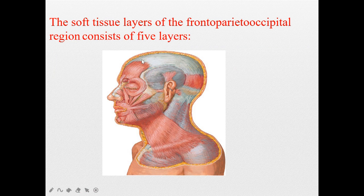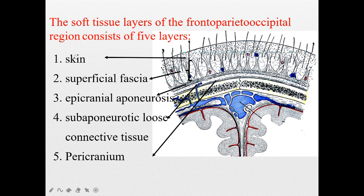Now look at the soft tissues of this region. Together there are five layers. The first is skin. The second is superficial fascia. The third is the epicranial aponeurosis. The fourth is the sub-aponeurotic loose connective tissue, also called the sub-aponeurotic space. The last layer, the fifth, is the pericranium.